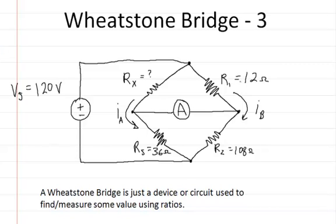Here you have R1, which is 12 ohms. You have current B flowing in this branch. And you have R2, which is 108 ohms. Rs, which is 36 ohms. Here, what you should know is that the current flowing through here is balanced. So there's no current flowing through the ammeter.